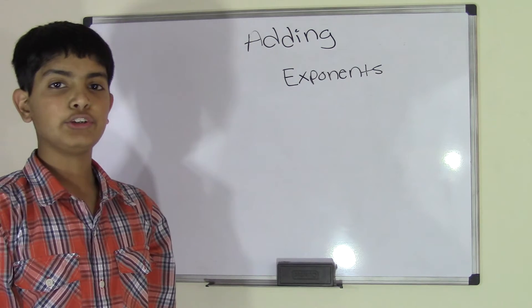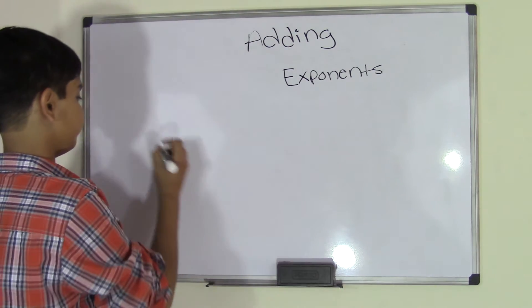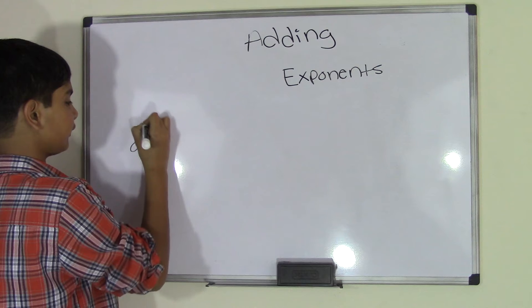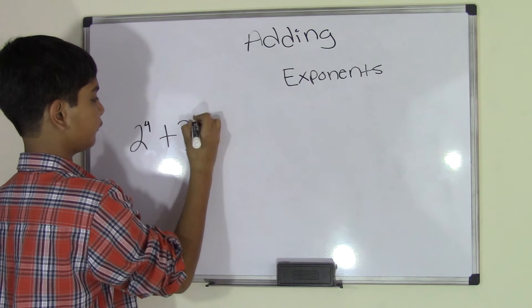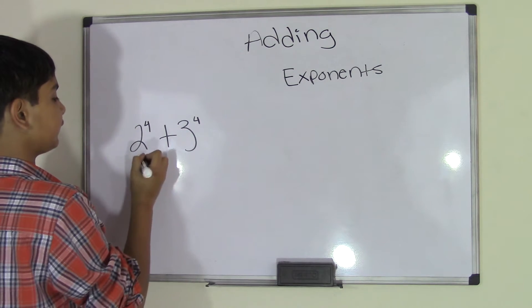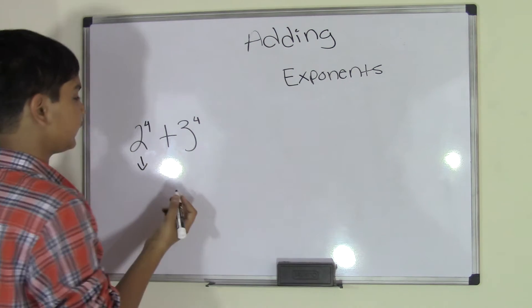When you add exponents, you probably get a problem like 2 to the power of 4 plus 3 to the power of 4. And to do this, all you have to do is make the exponents into multiplications.